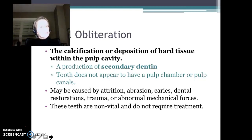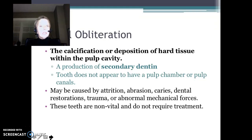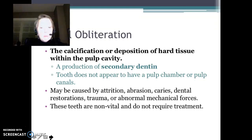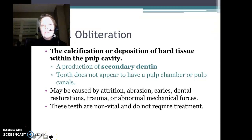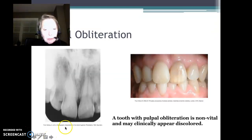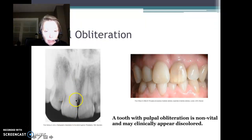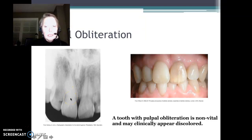Pulpal obliteration is just what it sounds like — the pulp itself is completely obliterated due to calcification or deposition of secondary dentin into the pulp cavity. When you look at it on an image, it looks like there's just not even a pulp chamber at all. These teeth are non-vital, dead. They don't require any kind of treatment. Take a look at this image on the left — tooth 8 and tooth 9. Tooth 8 appears to have no pulp chamber whatsoever; it is completely obliterated.